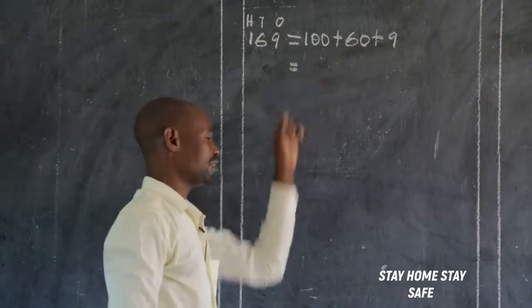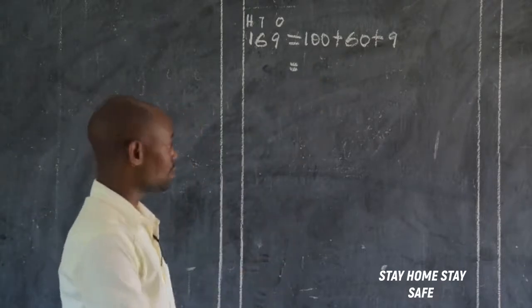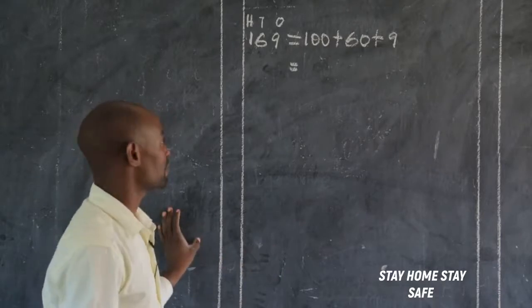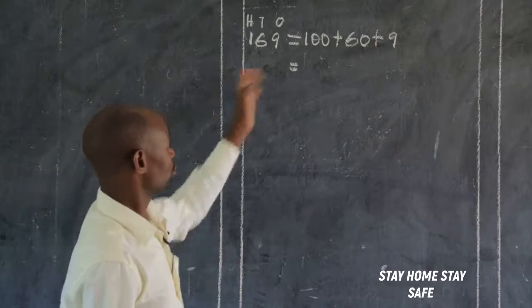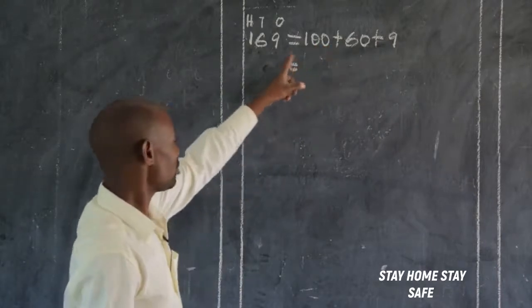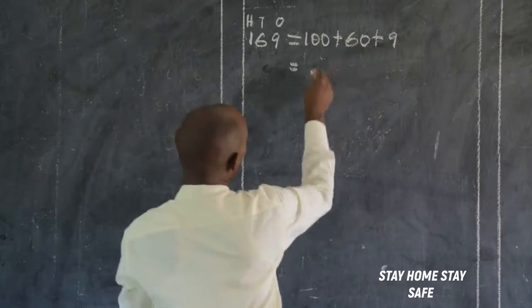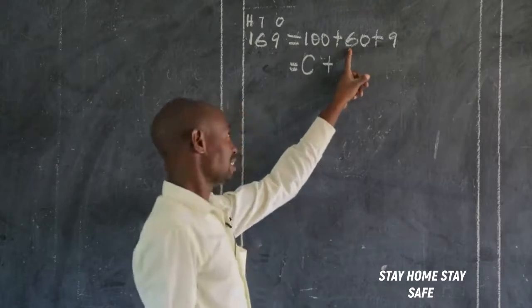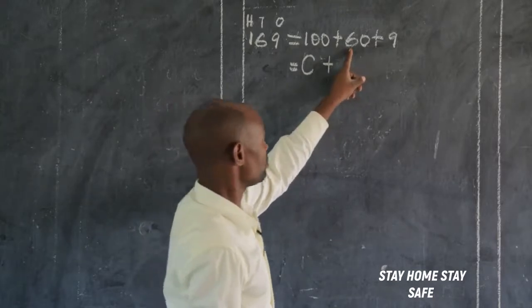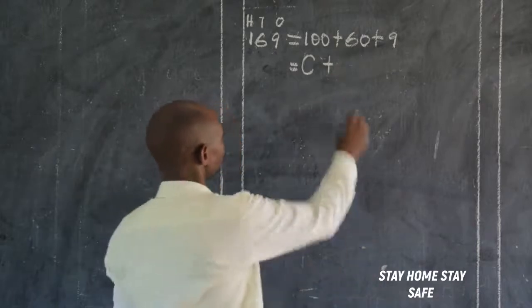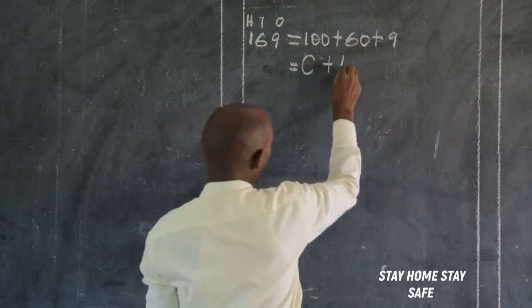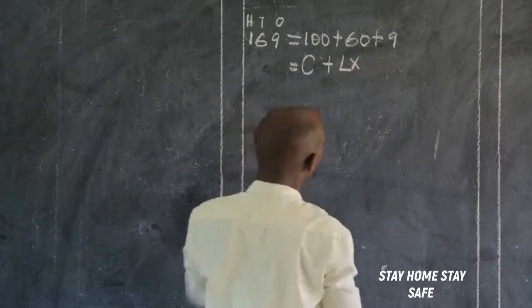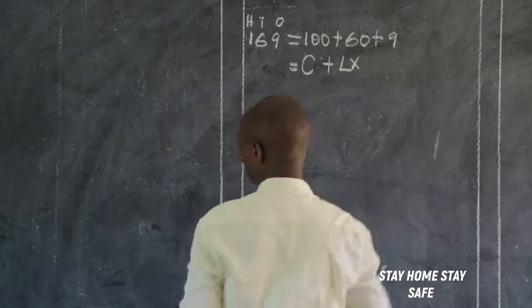How do we write one hundred in Roman numerals? You look at the table of the basic seven. You will find that one hundred is there — it is capital C. What about sixty? Sixty is got by adding on fifty, so it is fifty plus ten, which is L plus X, giving sixty.